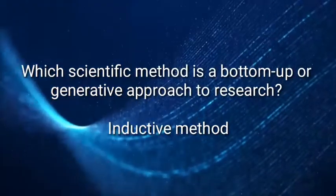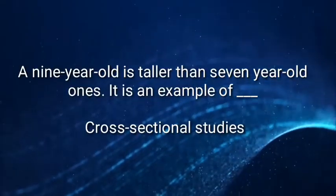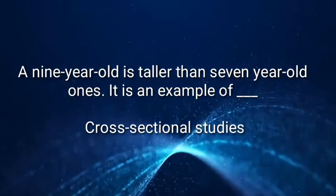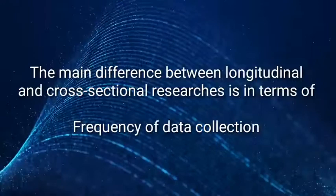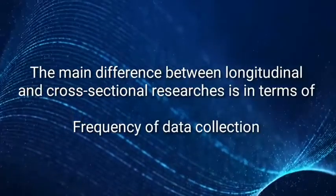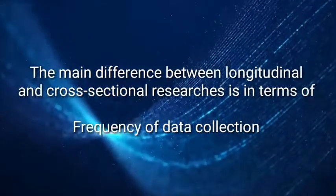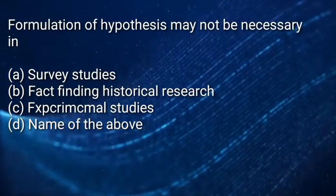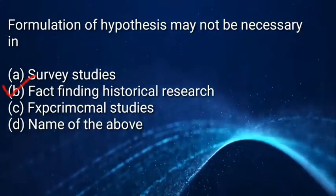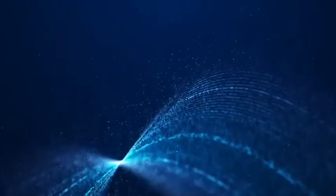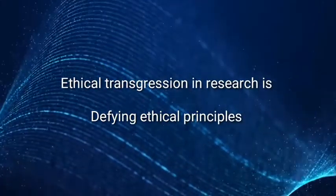Which scientific method is a bottom-up or generative approach to research? It is the inductive method. A nine-year-old being taller than a seven-year-old is an example of cross-sectional studies. The main difference between longitudinal and cross-sectional research is in terms of frequency of data collection. Formulation of hypothesis may not be necessary in fact-finding or historical research. Ethical transgression in research means violating defined ethical principles.